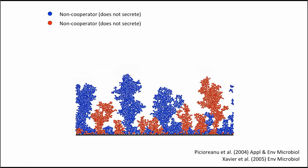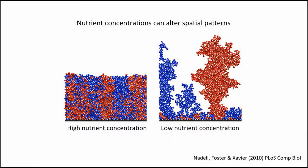One of the first things I looked at was how changing nutrient concentration yields very different spatial patterns. At low nutrients — the simulation I just showed — you get towers of cells where each tower is a clonal group with only one cell type. Whereas at high nutrient concentration, you get a large mixture of different cell types together. I then used Pseudomonas aeruginosa to test this hypothesis experimentally, a well-studied model system because it is a dangerous pathogen that particularly affects people with cystic fibrosis.